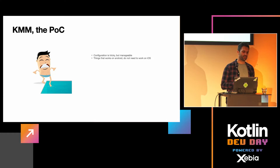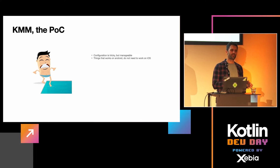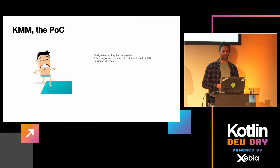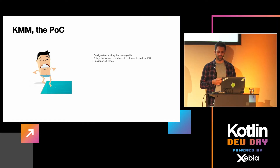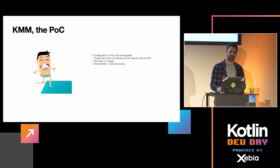The best thing you can do is work simultaneously on both platforms. If you just convert your Android project to KMM, things in Kotlin will probably just work — but iOS, that's another story. Also, one repository versus three repositories: during proof of concept we used one repo with a shared module, iOS module, and Android module, but in production we had three repositories, which makes configuration even trickier. And note that the iOS simulator is not the same as a real iOS device — they are two different targets.